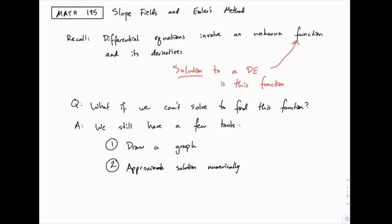But we're not entirely stuck if we can't directly find this function. If we can't find a solution in a nice closed form — y equals the answer — there are still some options available to us. Specifically, we can still draw a graph that will represent the solution, and this is where we'll draw what's called a slope field. We can also come up with approximate solutions numerically using an approach called Euler's method.